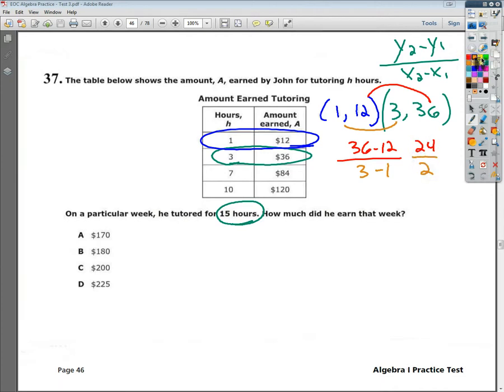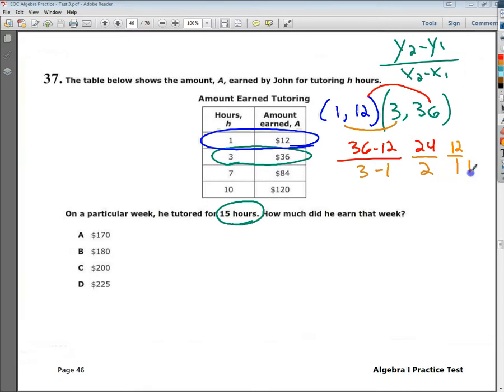And then divide, and we're going to get 12 over 1. So that means that every time we increase by 1 hour, we are getting $12. Okay, so that's $12 an hour. A lot of us would love to be making that an hour.